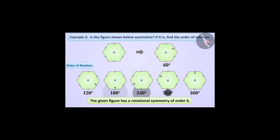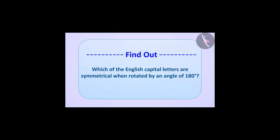Looking at these angles, we can say that in rotational symmetry, all the angles of rotation are multiples of the first angle. This is true for all situations. Now find out for yourself which letters among the English capital letters are symmetrical when rotated at an angle of 180 degrees.